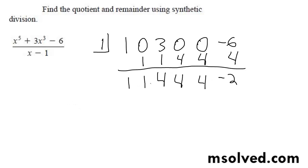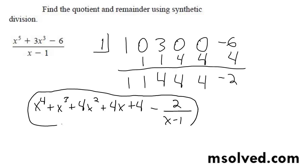So we'll end up with, we're going to end up here with, so this is going to be x to the 4th, plus x to the 3rd, plus 4x to the 2nd, plus 4x, plus 4, minus 2, over x minus 1. That's it.